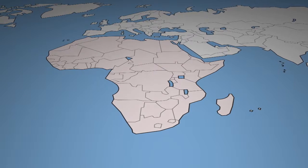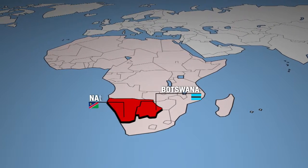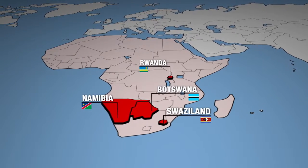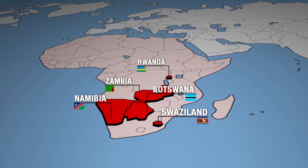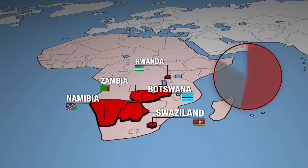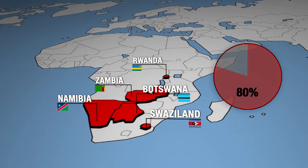Five countries are noteworthy: Botswana, Namibia, Rwanda, Swaziland, and Zambia, as they have provided treatment to 80% of their citizens suffering from the disease.